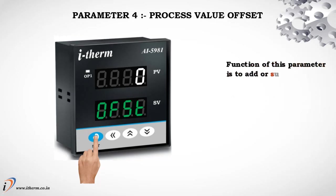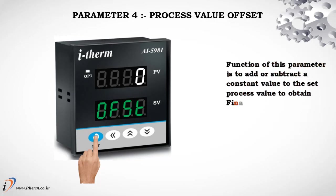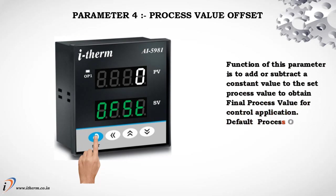Parameter 4: Process Value Offset. The function of this parameter is to add or subtract a constant value to the process value to obtain the final process value for control application. Default process offset value is 0.